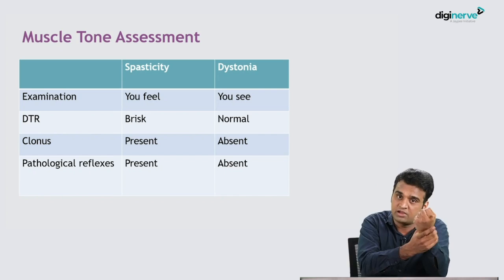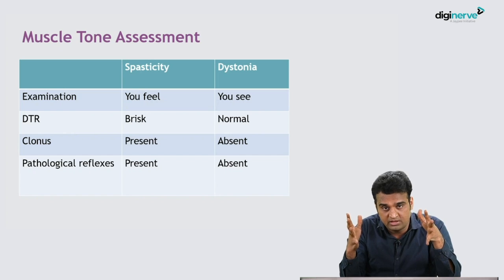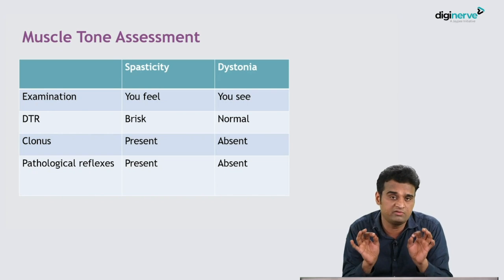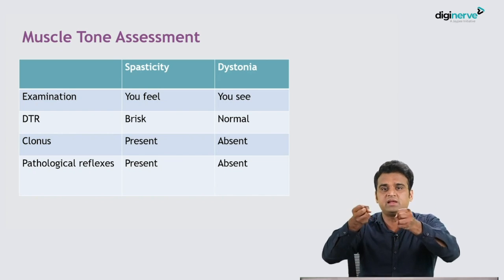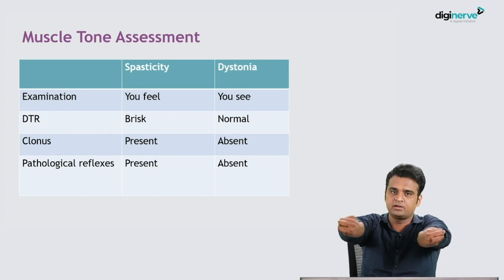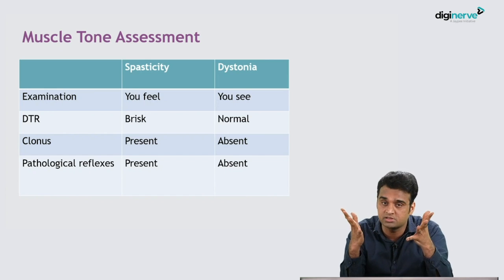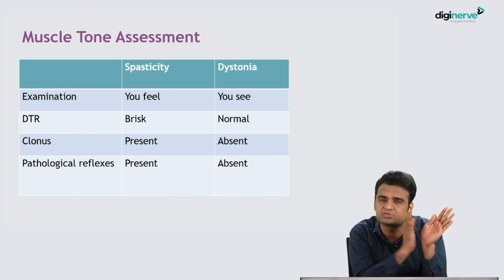In dystonia, when the child is tight the tone looks increased, but once the child falls asleep the tone decreases — tone is variable in dystonia. Dystonia is a movement disorder; it has nothing to do with tone. In spasticity, you feel the catch followed by release, deep tendon reflexes are usually brisk, clonus can be present, and pathological reflexes are present. Many children with cerebral palsy have mixed spasticity and dystonia — abnormal body movements along with catch-and-release and brisk DTRs, indicating mixed cerebral palsy.